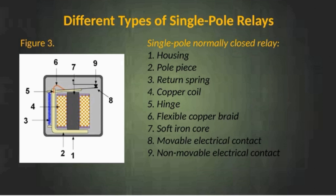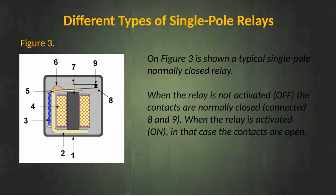Single pole normally closed relay. The components are: 1. Housing, 2. Pole piece, 3. Return spring, 4. Copper coil, 5. Hinge, 6. Flexible copper braid, 7. Soft iron core, 8. Moveable electrical contact, 9. Non-movable electrical contact. On figure 3 is shown a typical single pole normally closed relay. When the relay is not activated, the contacts are normally closed — connected 8 and 9. When the relay is activated, the contacts are open.